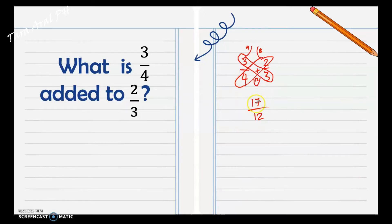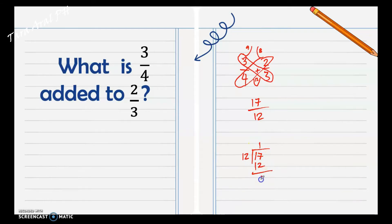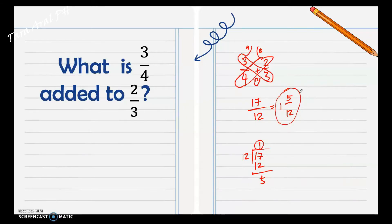Our answer is seventeen over twelve. Since the numerator is greater than the denominator, we need to regroup. Dividing seventeen by twelve, the quotient is one and the remainder is five. So the quotient becomes the whole number, the remainder is the numerator, and we copy the denominator. Our final answer is one and five twelfths.